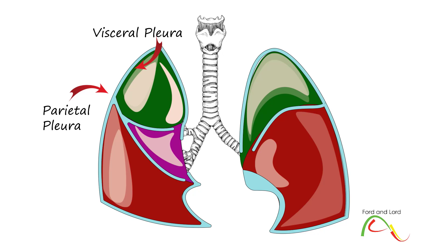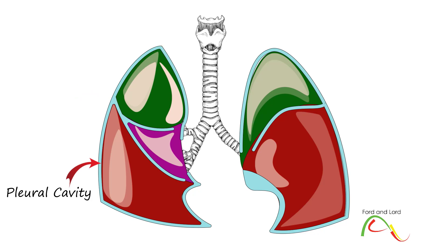The space between the pleura layers is known as the pleural cavity or pleural space. The pleura, just like all serous membranes, is smooth, shiny, and transparent. The pleural cavity contains a small amount of fluid derived from the serum, more commonly known as the pleural fluid. The mesothelial cells of the pleura are embedded on a matrix of collagen, elastic fibers, blood vessels, and lymphatics.